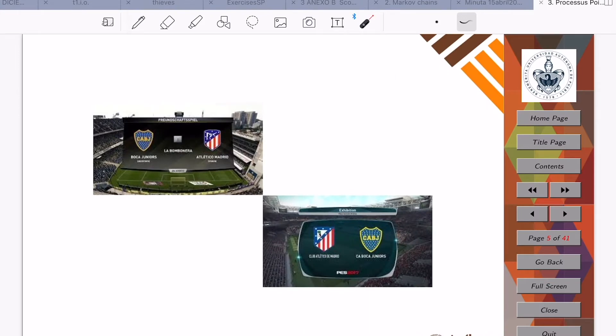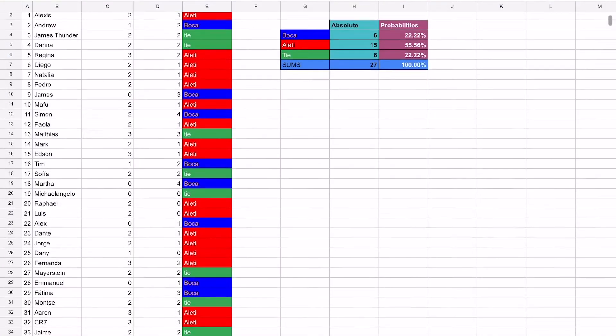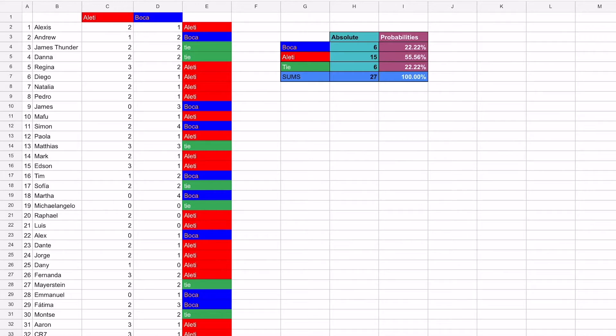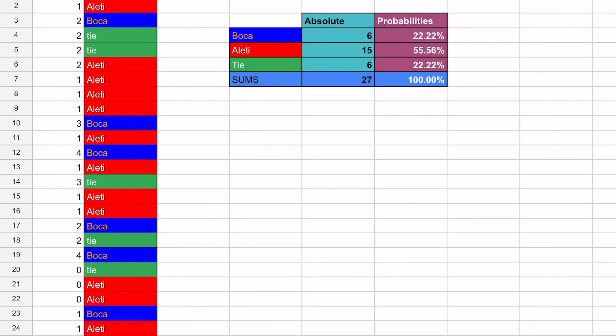This talk is precisely trying to predict the future. Just for a quick example, what would you say the outcome of a direct match between Boca Juniors and Atletico de Madrid would be? We asked 33 of our students the exact same question, and here are the results: 22% thought Boca would win, 22% thought the teams would tie, and almost 56% thought Atleti would be the victor.